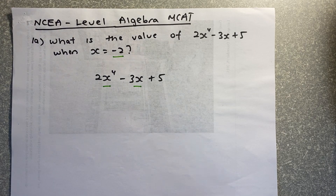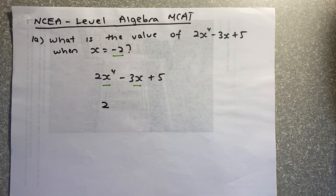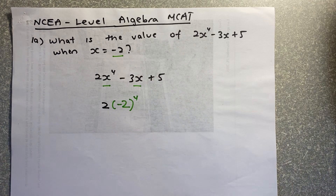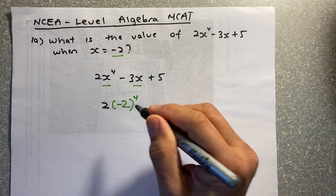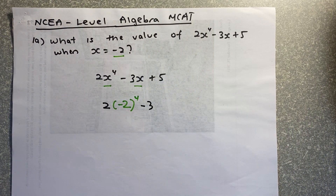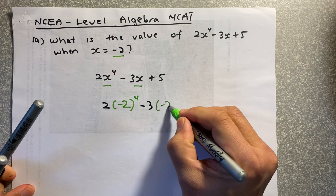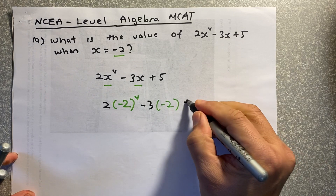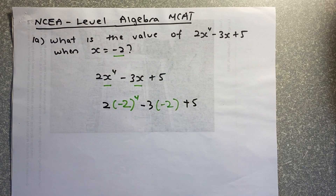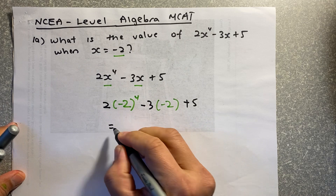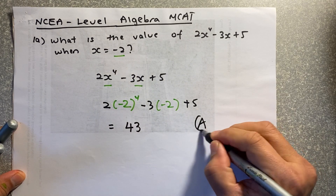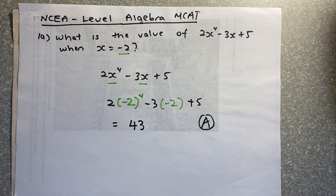We are going to put 2, then replace x with minus 2 to the power of 4, then minus 3, replace x with minus 2, and the last number is plus 5. Put it in your calculator and the answer is going to be 43. That will be your first achieve in this exam.